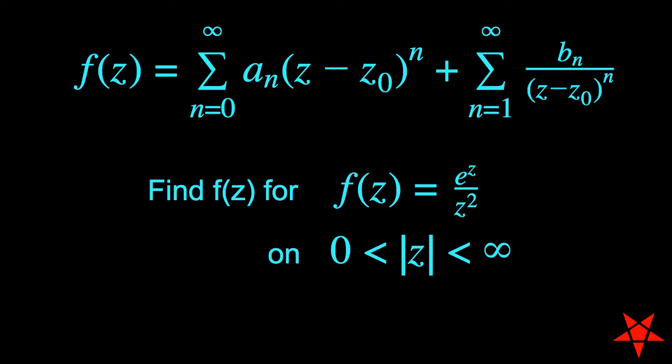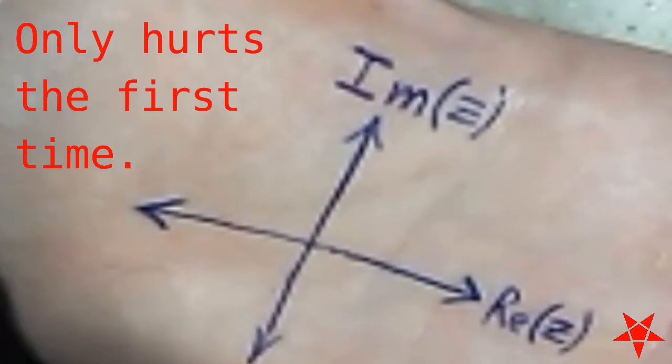On a roll with Laurent series, and today we will be looking at e to the z divided by z squared for a domain on the complex plane that includes absolute values of z greater than zero but less than infinity.